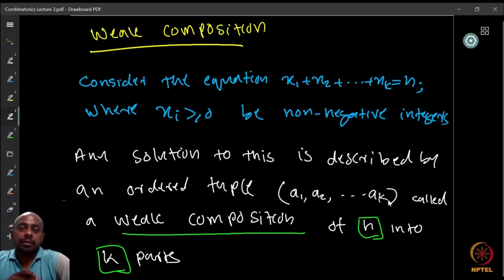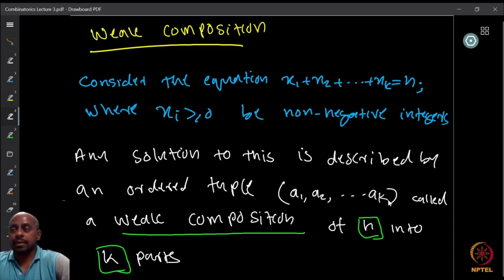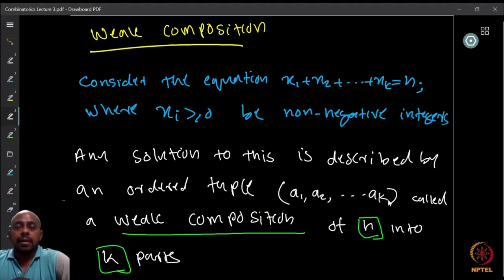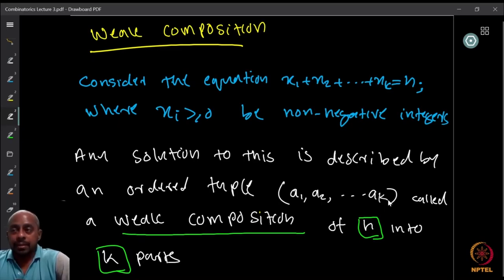For example, if x1 = 5 and x2 = 7, the tuple starts with (5, 7, ...). Such a tuple is called a weak composition of n into k parts — because we are writing n as a sum of k non-negative integers.